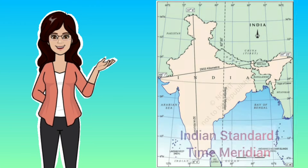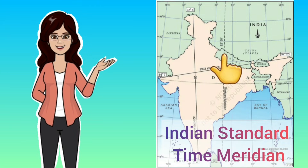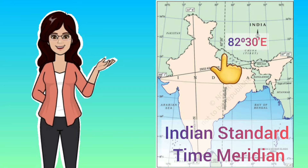To avoid confusion from following different local times, we have selected one standard time meridian for the whole country. It is called the Indian Standard Time meridian and its value is 82 degrees 30 minutes east. You can see it passes through the middle of the country, helping to avoid confusion which would have been there in the absence of a uniform time.